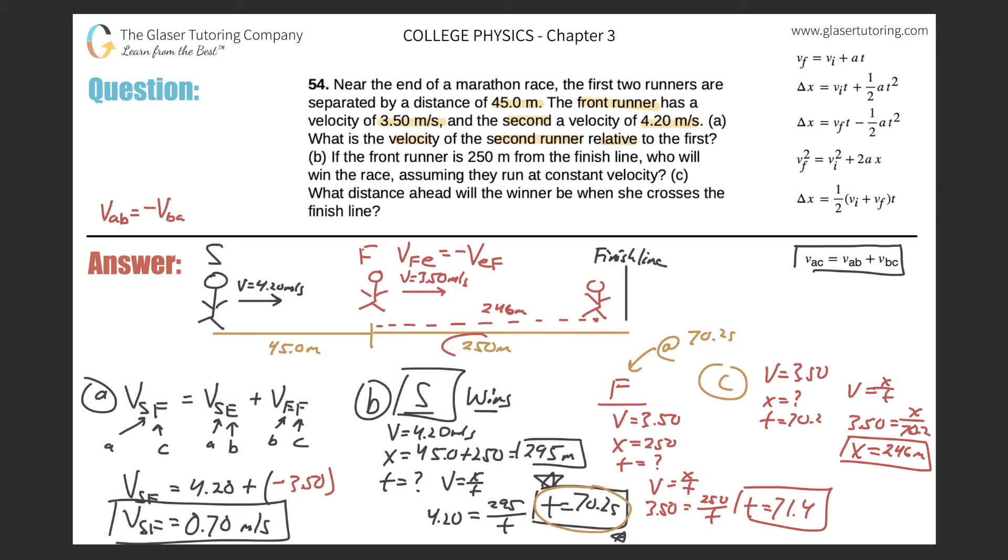So if they had 250 meters to go, and when the second person crossed the finish line, they covered only 246 meters, how far ahead then is the winner that just crosses the finish line? Meaning what's this distance right in here? It's easy, right? We just do the subtraction, 250 minus 246. And that will come out to be 4 meters. So that is the answer to letter C. So that's the distance ahead the winner will be. The distance the first runner will be 4 meters ahead.